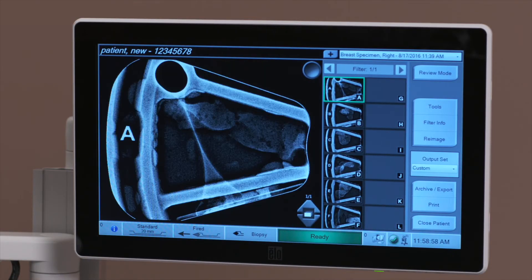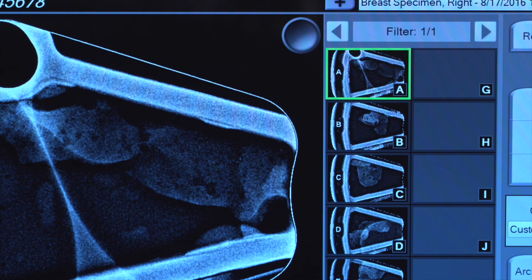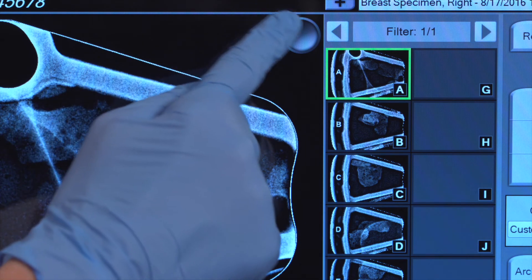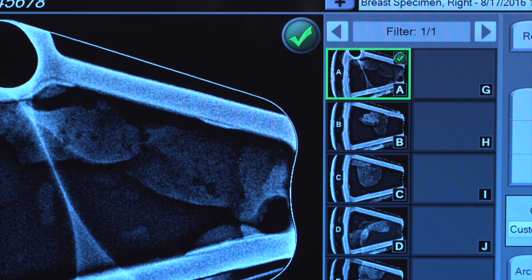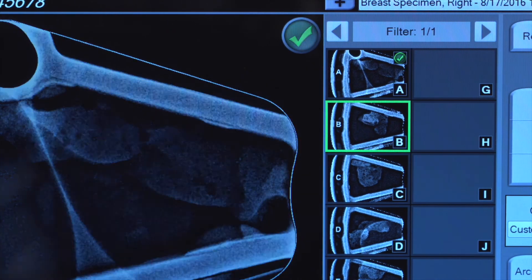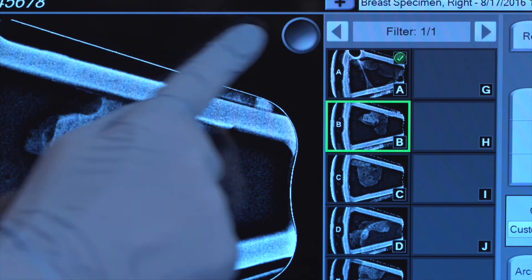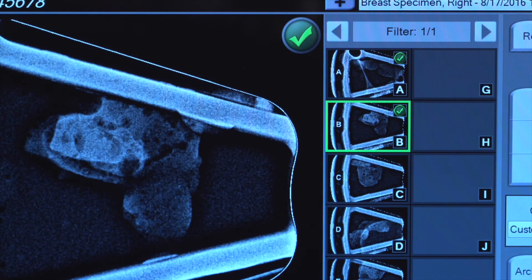While reviewing the images, the physician may want to tag the samples with calcifications. To do this, tap on the large circle in the upper right corner of the filter image. A large green check will appear when the image is tagged. To untag, simply tap on the circle a second time.